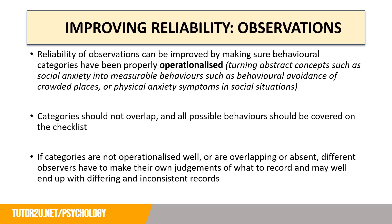Finally, how might we improve the reliability of observations? Reliability of observations can be improved by making sure behavioural categories have been properly operationalised. Operationalisation — turning abstract concepts such as social anxiety into behaviours that we can measure, such as behavioural avoidance of crowds or physical anxiety symptoms in social situations. In an observation, categories should not overlap and all possible behaviours should be covered on a checklist. If categories are not operationalised well, or are overlapping or absent, different observers have to make their own judgements of what to record and may end up with differing and inconsistent records.